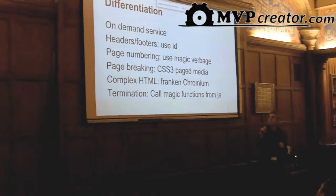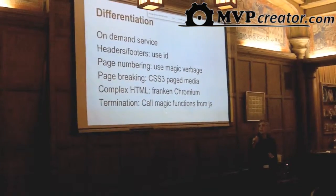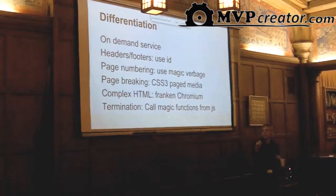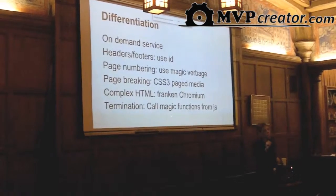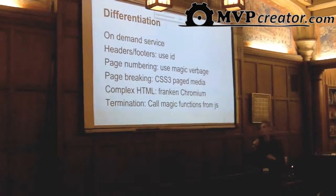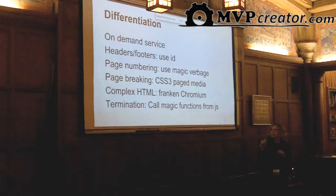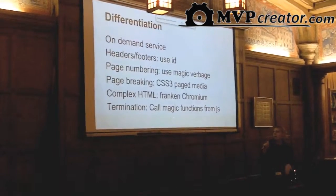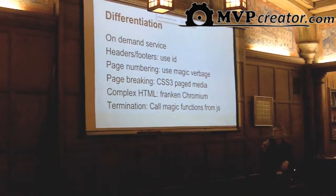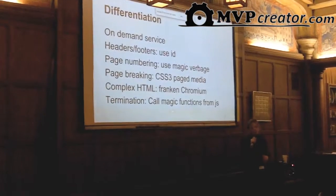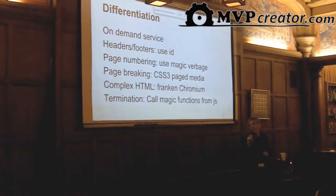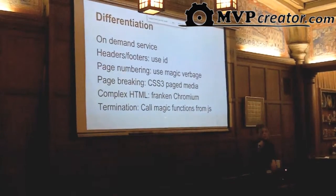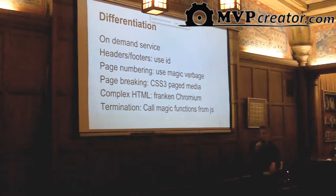Our differentiation is that it's an on-demand service. You basically use IDs to denote your headers and footers. For page numbering, you use a little bit of magic verbiage in your HTML. For page breaking, you can use your CSS3 page media. Complex HTML is rendered using Phantom and Chromium server-side, and for termination of JavaScript, you just call a magic function from your JavaScript when your PDF is done.